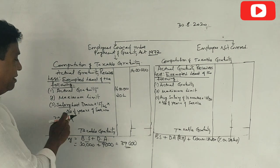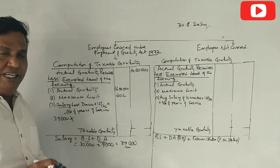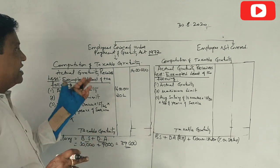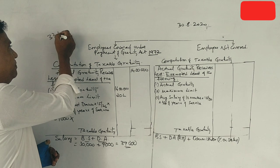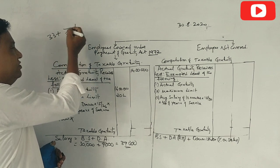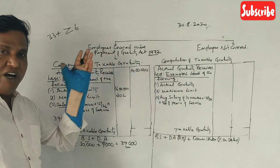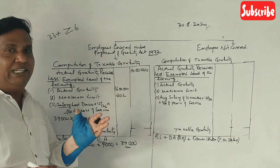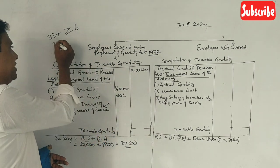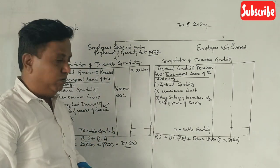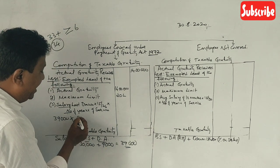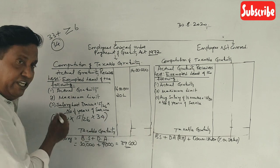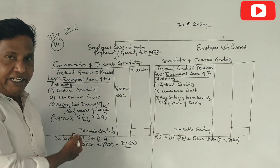The number of completed years of service is 33 years plus 9 months. Since 9 months is more than or equal to 6 months, it is rounded up to 34 years. So, under the 15/26 rule, we take 34 years of service.